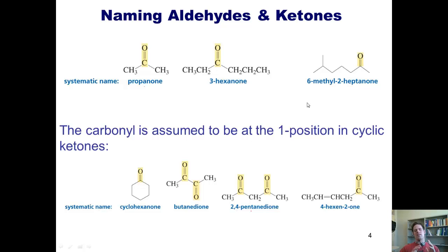Now, if you have a cyclic ketone, we always assume that the carbonyl position is position number one. This is exemplified here in cyclohexanone. We don't have to put a number because it is assumed that the carbonyl is at position number one.